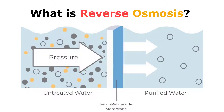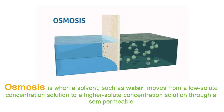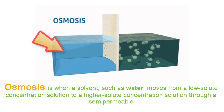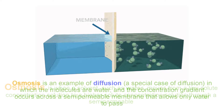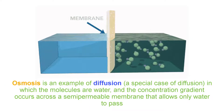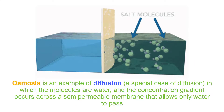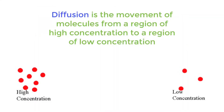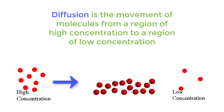Before we can discuss what reverse osmosis is, we need to begin with an understanding of osmosis and why it matters. Osmosis is when water moves from an area of low solute concentration to an area of high solute concentration through a semi-permeable membrane. The membrane allows only water through, until the water molecules distribute themselves evenly in a space. This type of movement is generally referred to as diffusion, but when in reference to water it is called osmosis.